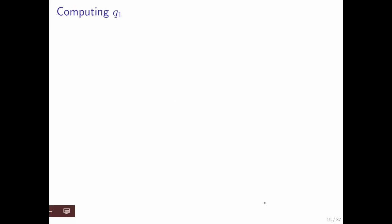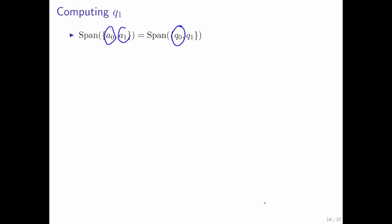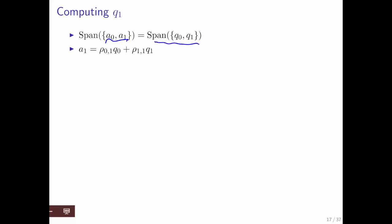Now let's look at computing q1. We want a0 and a1 to span the same space as q0, q1, and now we know what q0 is — we computed that in the previous step. So we know q0, we know a0, and we know a1, and the purpose of the game is going to be to compute q1. If these vectors are in the span of q0, q1, then it has to be the case that a1 can be written as a linear combination of q0 and q1.